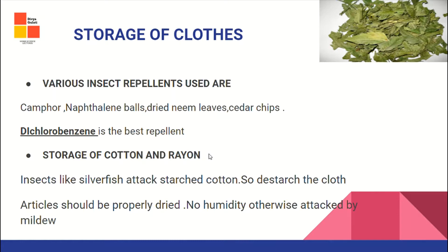Insect repellents used include camphor, naphthalene balls, dried neem leaves, cedar chips, and dichlorobenzene — which is the best repellent. For cotton and rayon storage: insects like silverfish can attack starched cotton, so cotton should always be destarched before storing. Articles should be properly dried with no humidity, otherwise they are attacked by mildew.